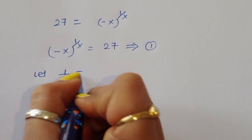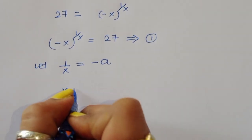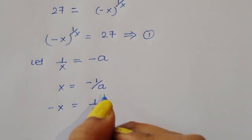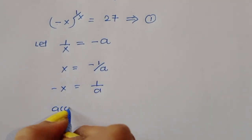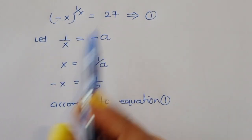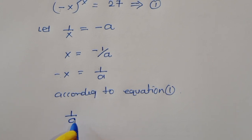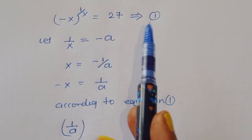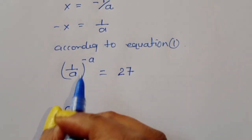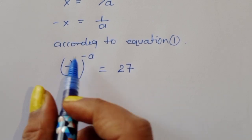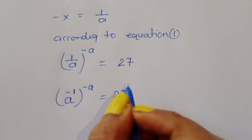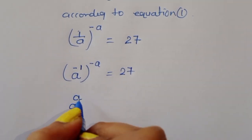Let 1/x equal minus a, so x equals minus 1/a and minus x equals 1/a. Substituting into the equation: (1/a) to the power (minus a) equals 27. Since 1/a is a to the power minus 1, we get a to the power (minus 1 times minus a) equals 27, which simplifies to a power a equals 27.